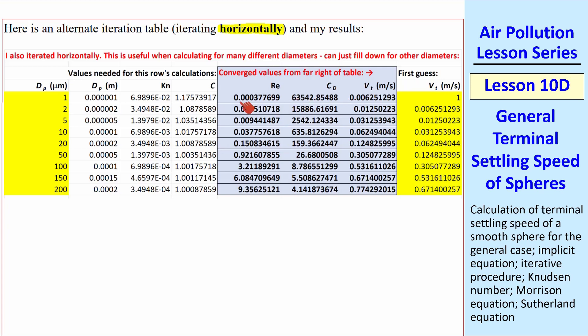These are the final converged values. What's nice about this horizontal method is that once you have this whole row set up, you can fill everything down and then put in different diameters. That way, for example,